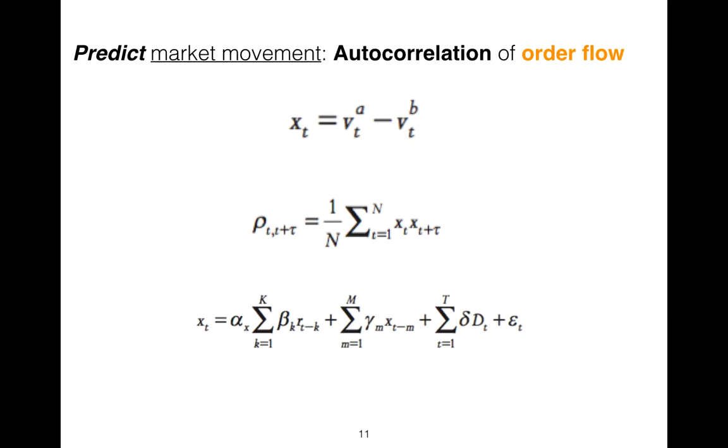What is order flow? A very important variable, x(t), is the difference between trading volume resulting from market buy orders matched with the ask side of the order book and v(t) for the bid, which is the trading volume triggered by market sell orders hitting the bid side of the order book.